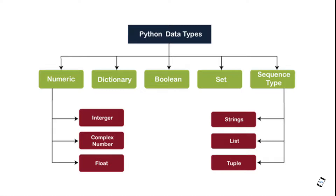Now let's start with numerical. In numerical, there are integer, float, and complex numbers. In sequence type, string is included. For an integer, you have whole numbers. For a complex number, the format is a+bj. For a float value, you have a decimal value. String is for alphabetic or text data.